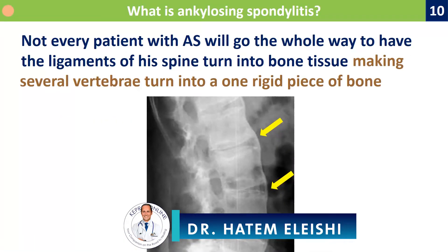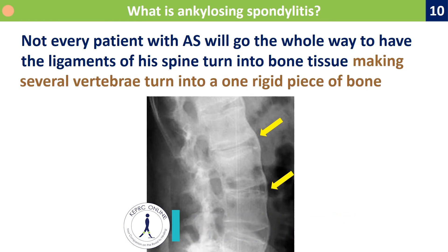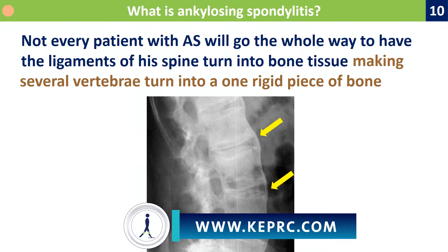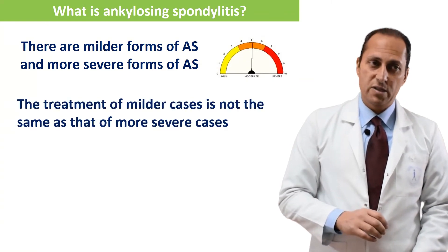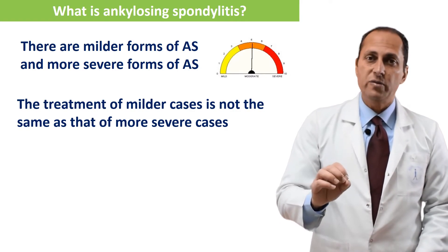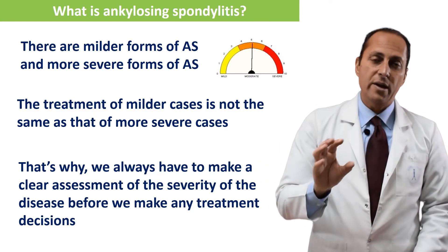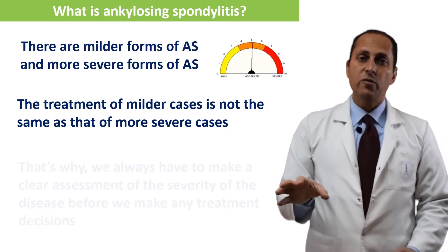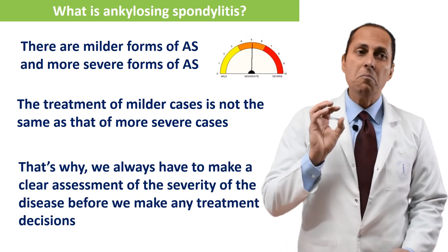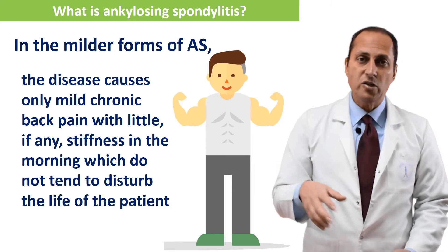Number ten: not every patient with ankylosing spondylitis will go the whole way to have the ligaments of the spine turn into bone tissue, making several vertebrae fuse into one rigid piece. This will not happen to every patient — only those with a more aggressive disease. There are milder forms and more severe forms. In the milder forms, the disease causes only mild chronic back pain with little if any stiffness, and it does not affect the daily life of the patient most of the time.